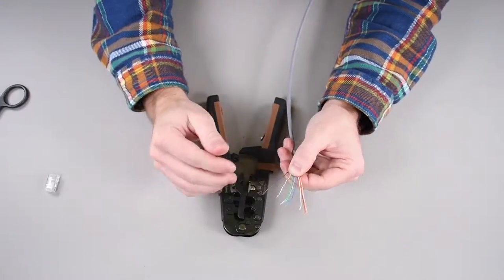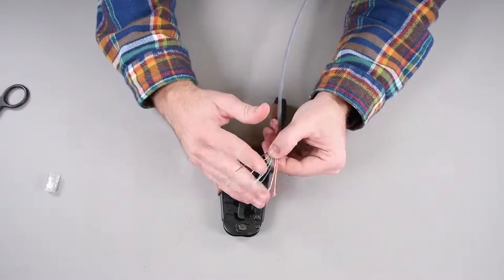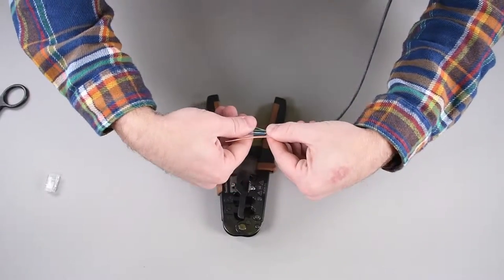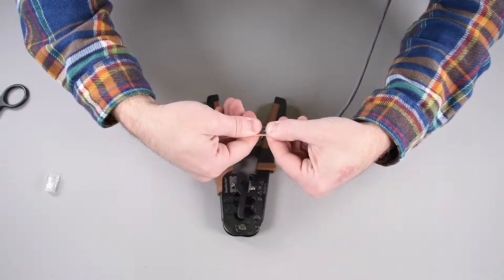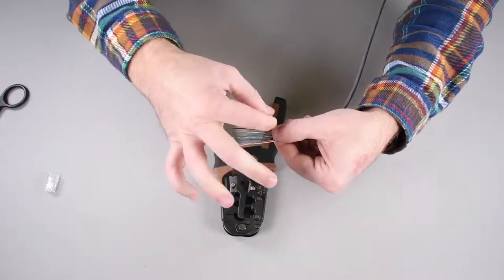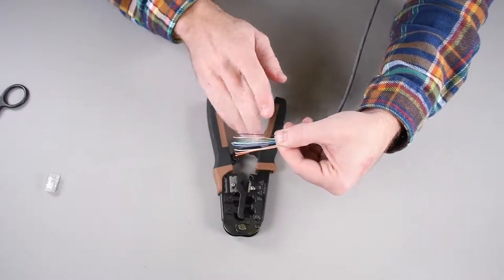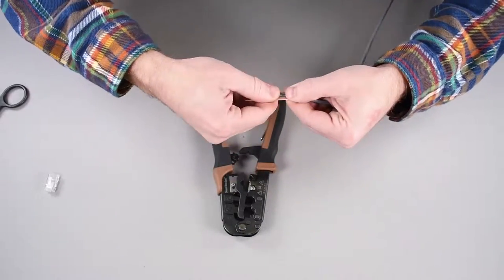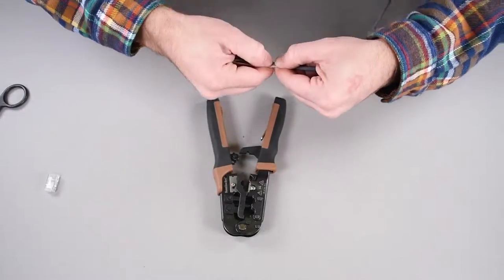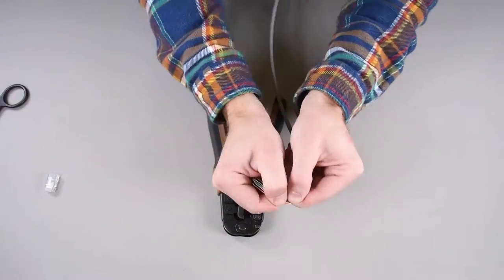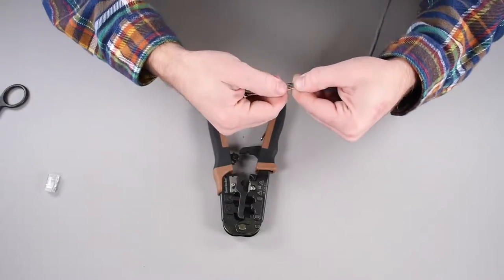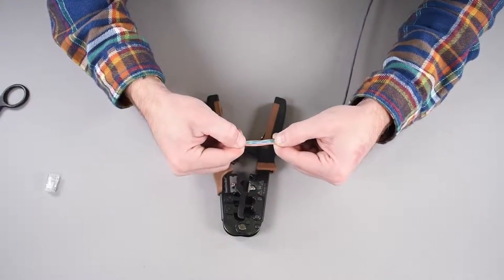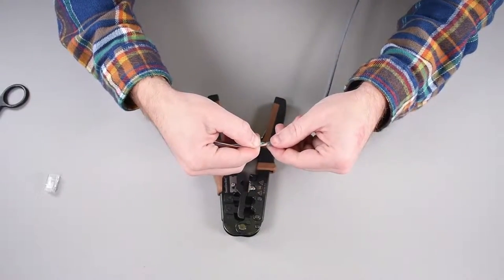And one good trick to get these all snugged up next to each other and flat is to pinch them with this hand and come in with this hand. And I'm going to bend them like this in plane with how they're arranged. So you grab them like this and then bend them like that back and forth. It snugs them up together. And you can also bend them down. So I'm bending them like that back and forth. So now they're all nice and snugged up together.